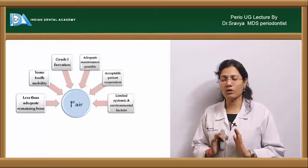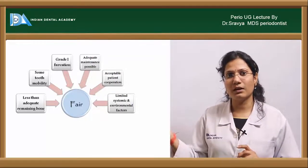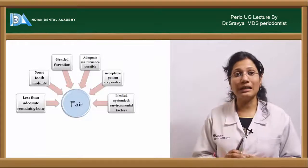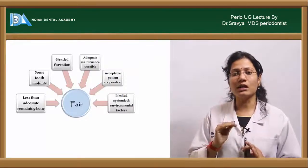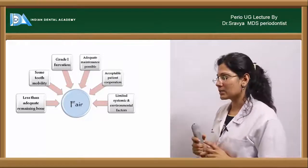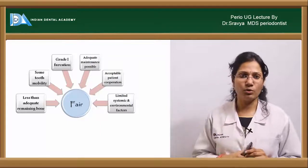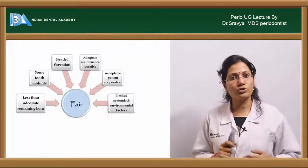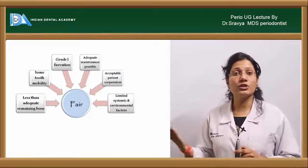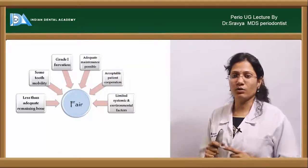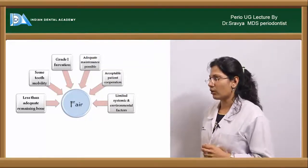In a fair prognosis, you have an acceptable kind of patient cooperation, but systemic and environmental factors are involved — however, they are under control, so the influence of those factors is limited. There is less than adequate bone support. In good prognosis there is adequate bone support, whereas in fair it changes to less than adequate bone support. Apart from that, there is some kind of tooth mobility and grade one furcation involvement.